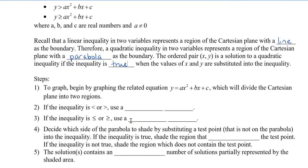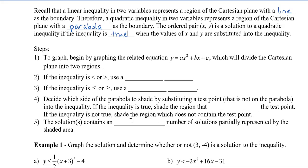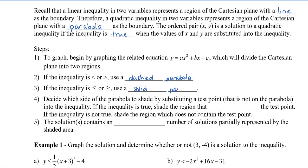Let's take a look at the steps to solving and graphing the inequality. To graph, begin by graphing the related equation y equals ax squared plus bx plus c, and this will divide the Cartesian plane into two regions, similar to the line. If the inequality is strict — less than or greater than without the equal to — we're going to use a dashed parabola. If the inequality is less than or equal to, or greater than or equal to, we're going to use a solid parabola.